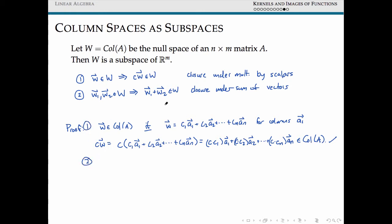And for our second property, I think you can guess where this is going. We'll actually say for W1 and W2 inside of our column space, that means that we can write W1, and I'll actually steal the exact representation we have here. So W1 can be written as some linear combination of this form.